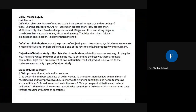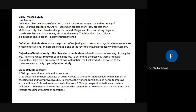This is Unit Number Two on Industrial Engineering: Method Study. The points covered include definitions, objectives, scope of method study, basic procedures, symbols, recordings, and different types of charts — operation process charts, flow process charts, multiple activity charts, two-handed process charts — and two diagrams: flow diagram and string diagram.